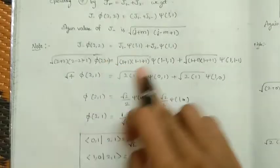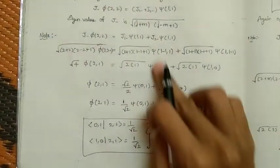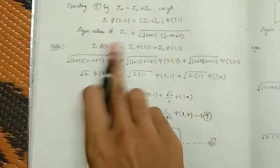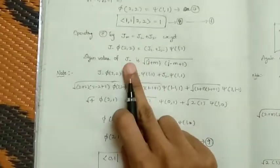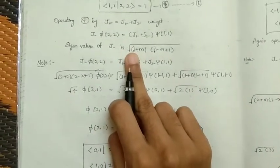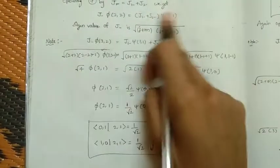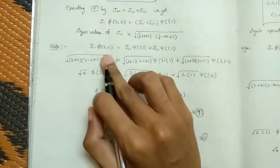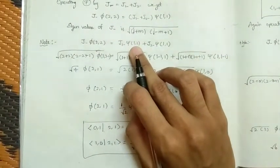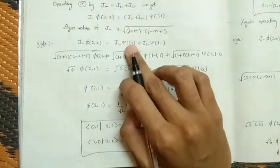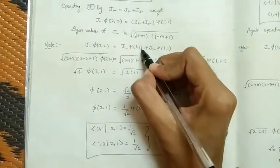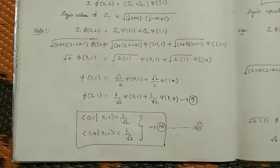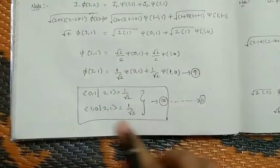By operating j-minus on both sides of the equation and using the eigenvalue formula: root over [j+m][j-m+1], and keeping in mind that on the left-hand side j and m values are given, while on the right-hand side j1, j2, m1, m2 values must be substituted carefully — from this we obtain another set of Clebsch-Gordan coefficients.